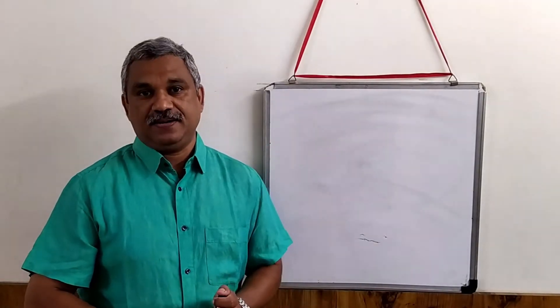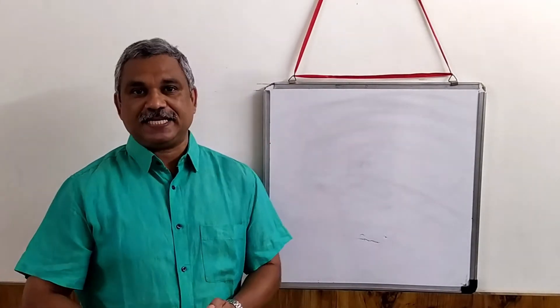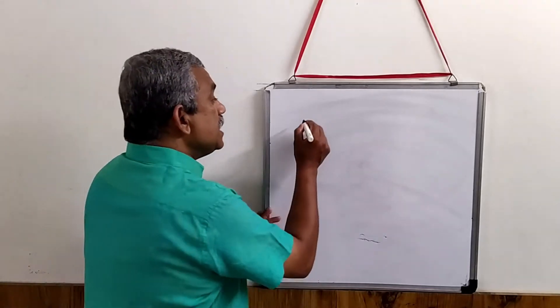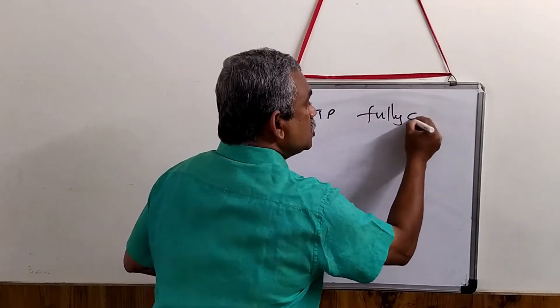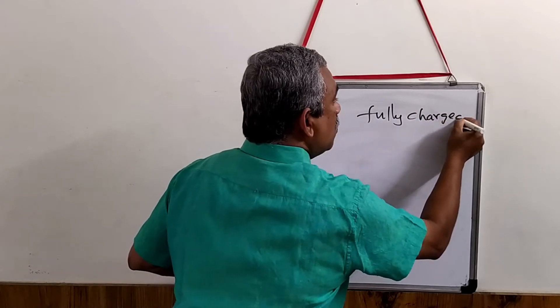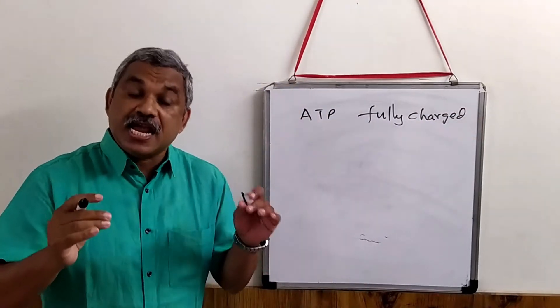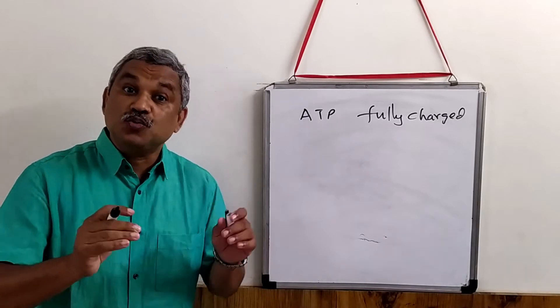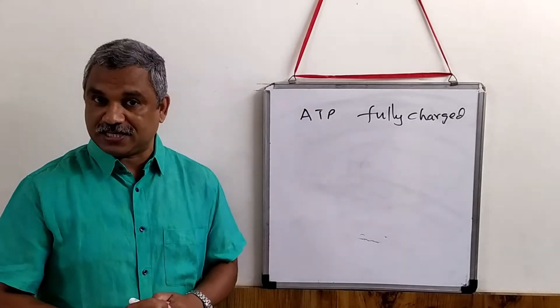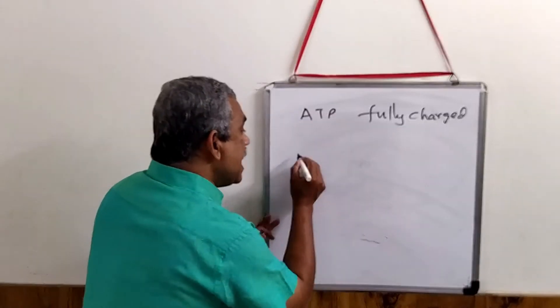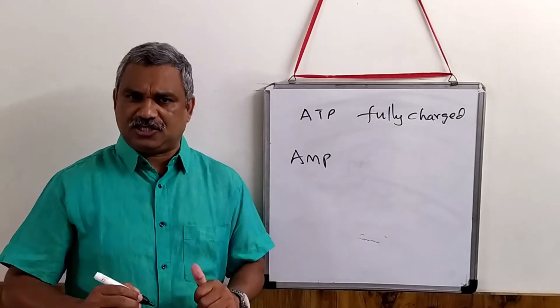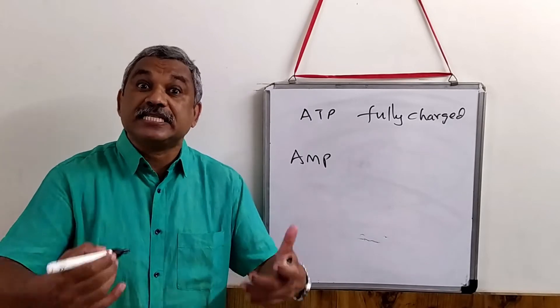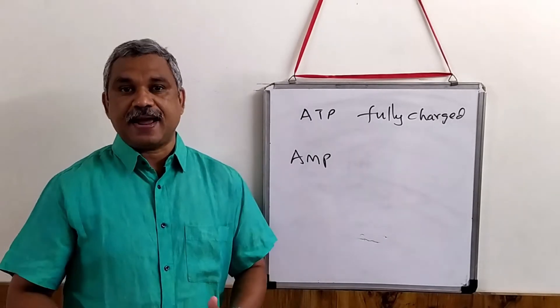For example, when ATP is present, we say that the cell is fully charged. Why? Because an ATP molecule has got two phosphoanhydride bonds. Now, when AMP is present, we say that the cell is not at all charged. It does not have the capacity to promote reactions, it does not have the capacity to couple reactions.